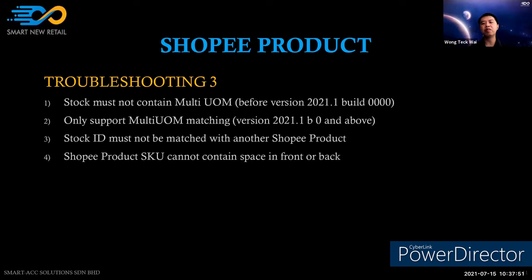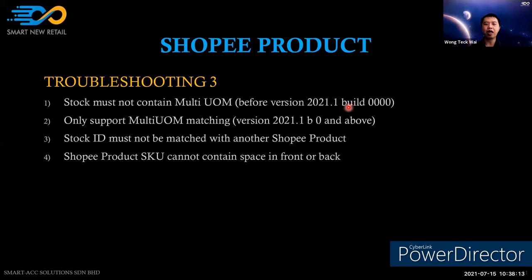The third troubleshooting step: if the client is using Dynamo version earlier than 2021.1 Build 0, you cannot do matching with multi-UOM stock items — there will be an error. If the client has multi-UOM items and wants to do matching, they must upgrade to version 2021.1 Build 0 or later, as this is only supported from that version onwards.